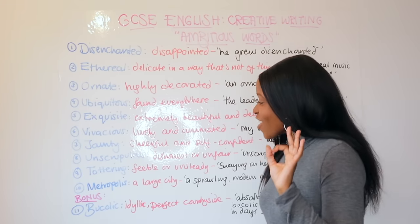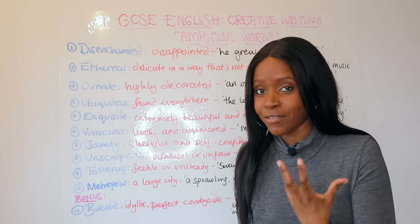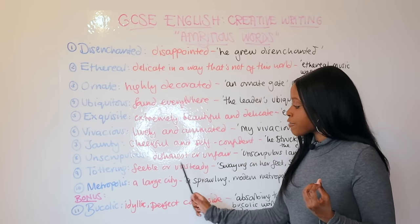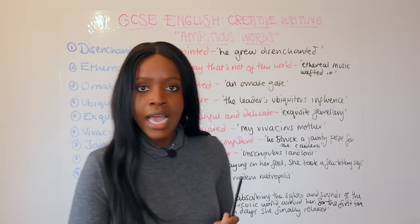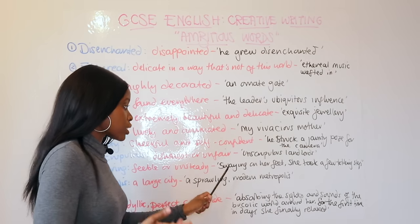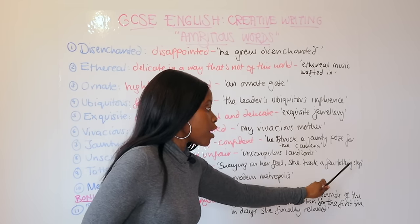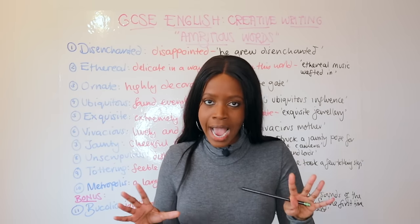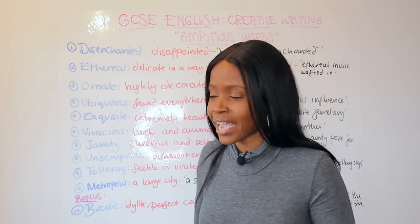The ninth word is actually an interesting verb: 'tottering,' which means feeble or unsteady. For example, you can use the phrase: 'Swaying on her feet, she took a few tottering steps' — describing how unsteady she is as she's moving.